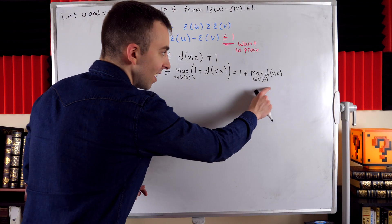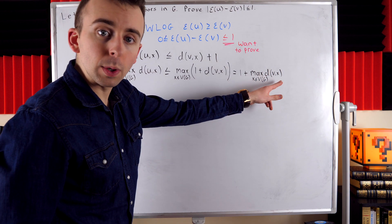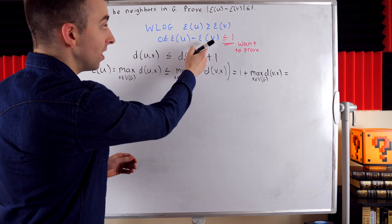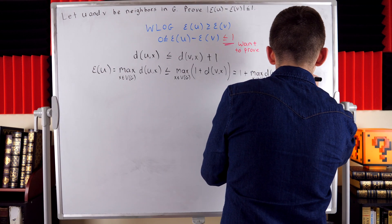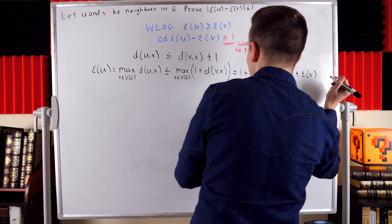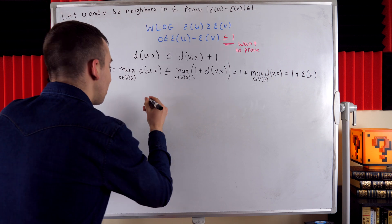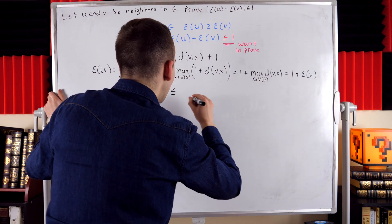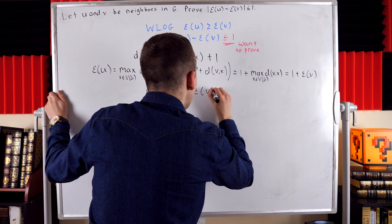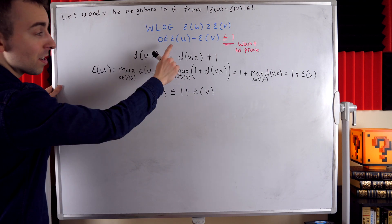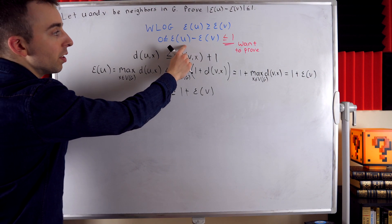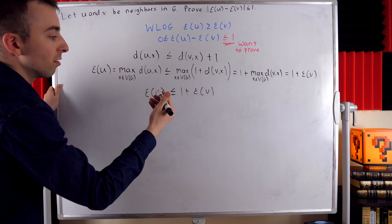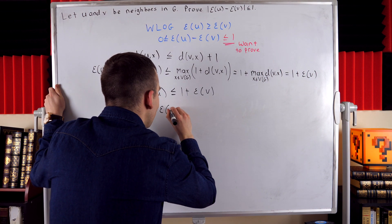The maximum distance between v and x taken over all vertices x is, by definition, the eccentricity of v. So this is 1 plus the eccentricity of v. What we have is that the eccentricity of u is less than or equal to 1 plus the eccentricity of v, which gives us precisely what we wanted to prove. We wanted to prove that the eccentricity of u minus the eccentricity of v is less than or equal to 1, and we get that by subtracting the eccentricity of v from both sides.